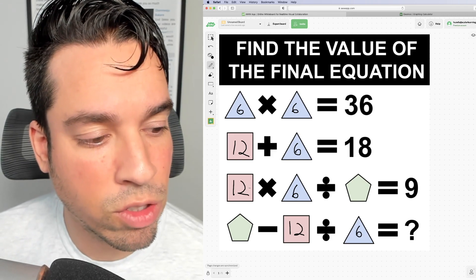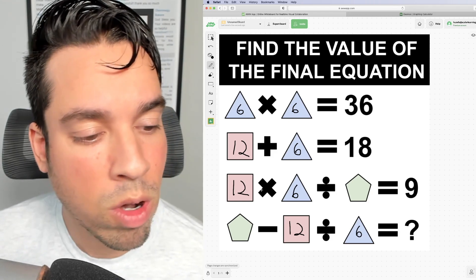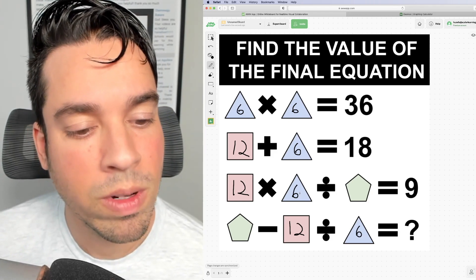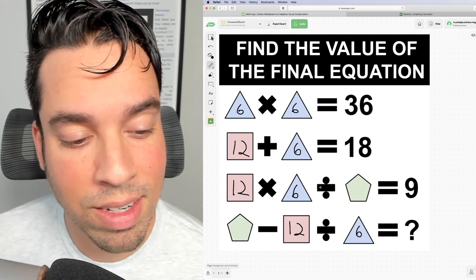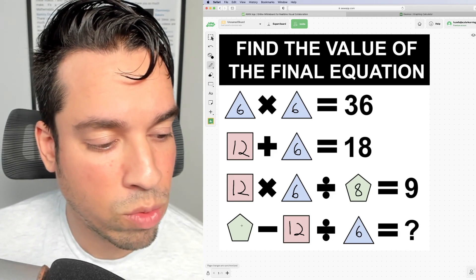Now we come to the third line and it says the square times the triangle divided by the pentagon must equal 9. Well, 12 times 6 is 72. 72 divided by what is 9? That of course is 8. So the pentagon has a value of 8.